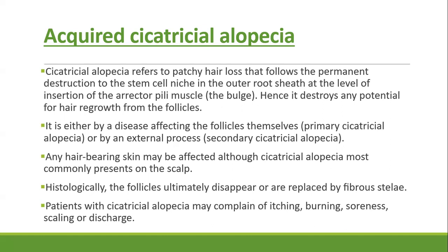It is caused either by disease that affects the follicles themselves, which is classified as primary cicatricial alopecia, or by an external process which is called secondary cicatricial alopecia. Secondary causes include burns or any other physical trauma. Any hair-bearing skin may be affected, but this condition is most commonly present on the scalp. Histologically, the follicles completely disappear and are replaced by fibrous tissue.